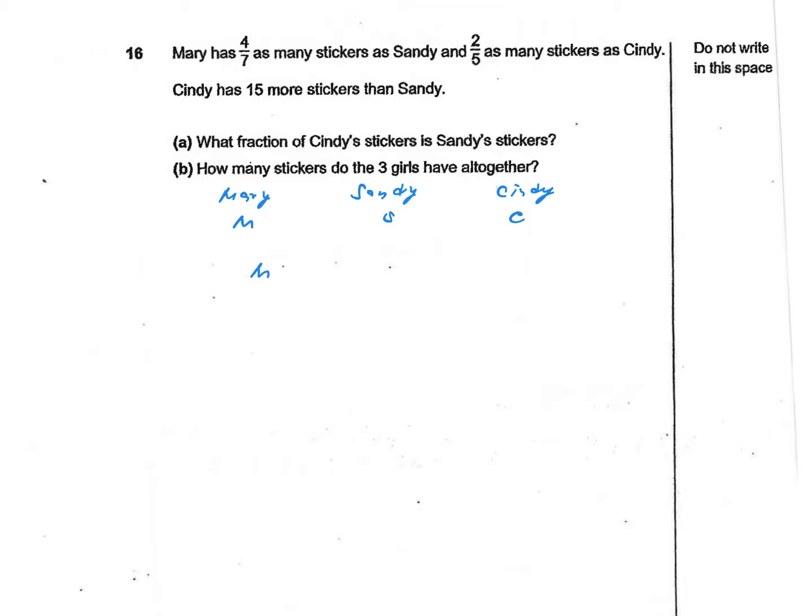Mary has 4/7 as many stickers as Sandy, and Mary has 2/5 as many stickers as Cindy. So this is our relationship number 1. We also have another condition: Cindy has 15 more stickers than Sandy, so C minus S equals 15.